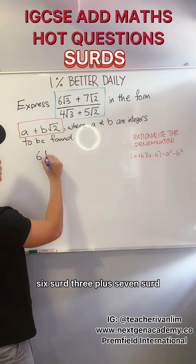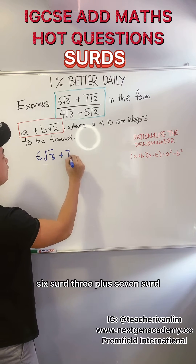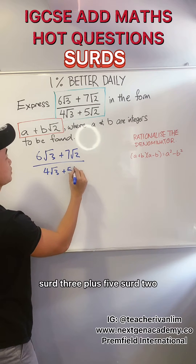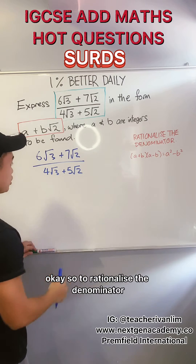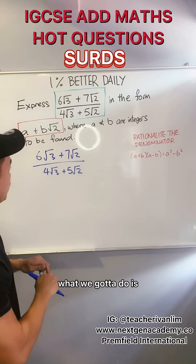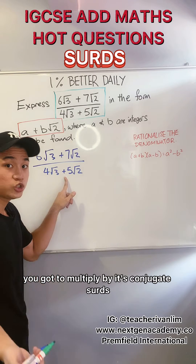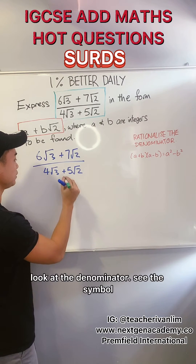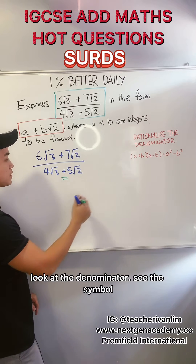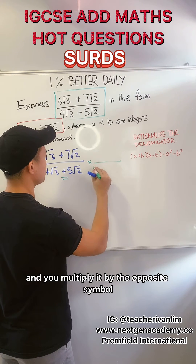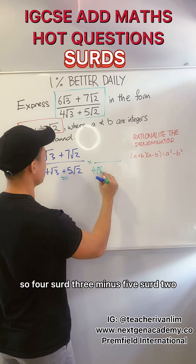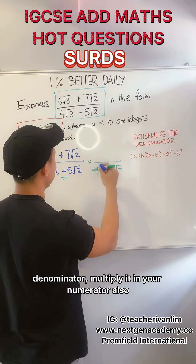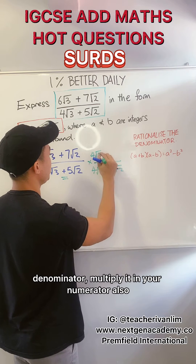So let's write down the question: 6√3 plus 7√2 over 4√3 plus 5√2. To rationalize the denominator, what we've got to do is multiply by its conjugate. Look at the denominator, see the symbol, and multiply it by the opposite symbol. So 4√3 minus 5√2. Whatever you multiply in your denominator, multiply it in your numerator also.